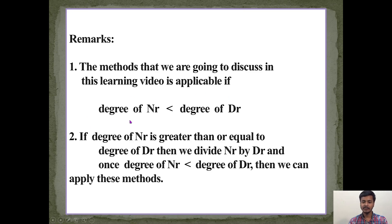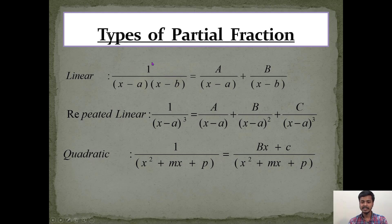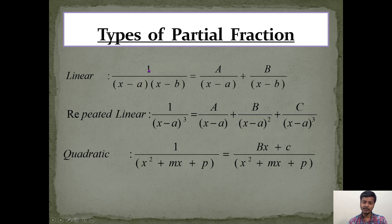For example, when the degree of the numerator is zero and the degree of the denominator is two, this satisfies the condition and we can apply the methods. Such fractions are called proper fractions; otherwise they are improper fractions. Note that the numerator is not always just one — it can be any number like seven or five, or an expression like 2x + 3 or x² + 2x + 4.